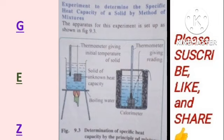At this point, we assume that the temperature of the solid is 100 degrees Celsius, which is the temperature of boiling water. Finally, the calorimeter is covered with a lid and the water is gently stirred to ensure a uniform distribution of temperature. The highest steady temperature of the mixture is read and recorded.